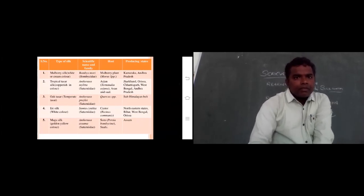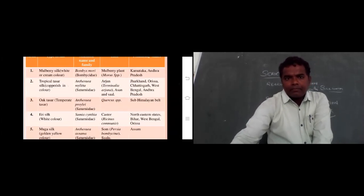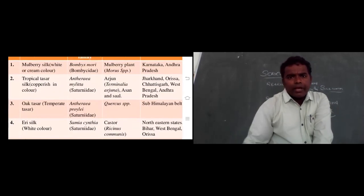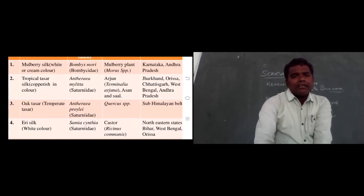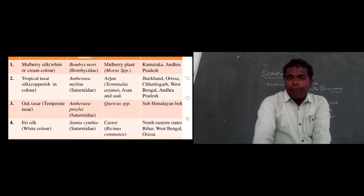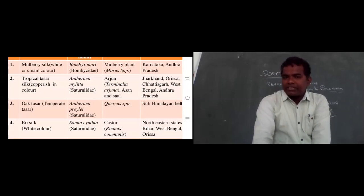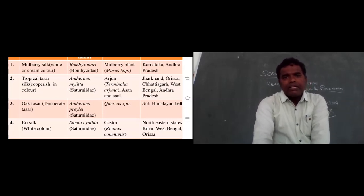Mulberry silk is white and cream in color. The silkworm is Bombyx mori, belonging to family Bombycidae. It eats mulberry plants — Morus species. This mulberry silk industry is mainly in Andhra Pradesh and Karnataka.